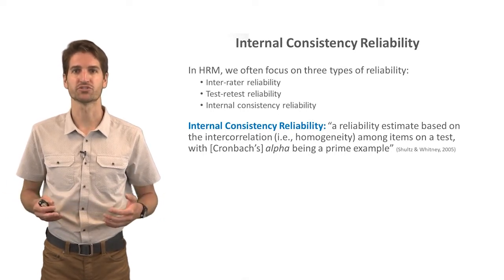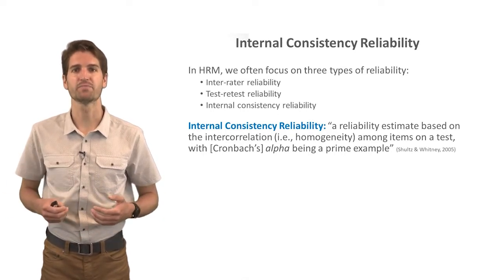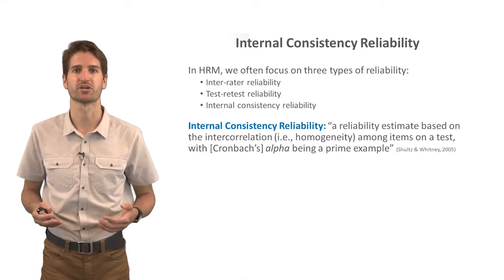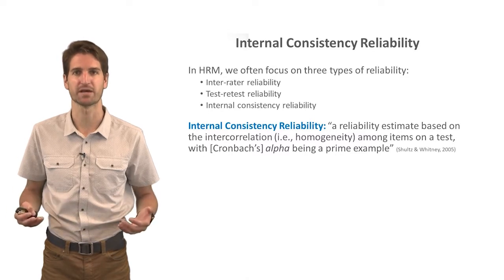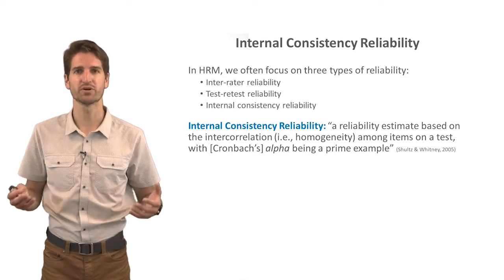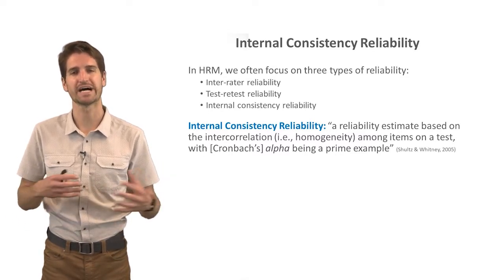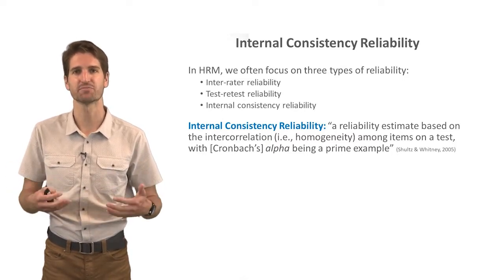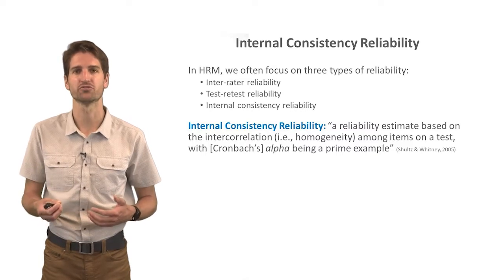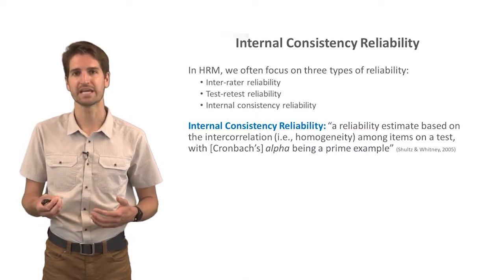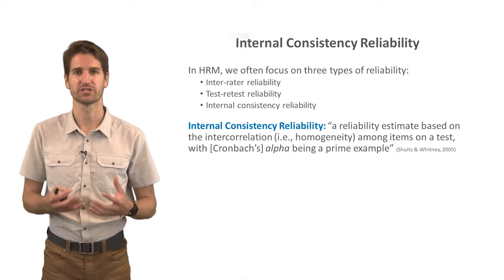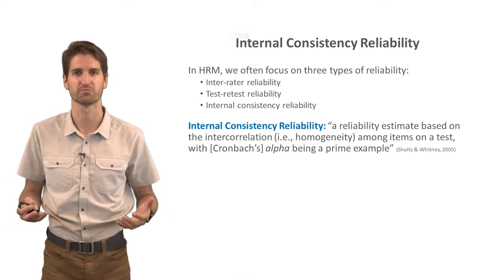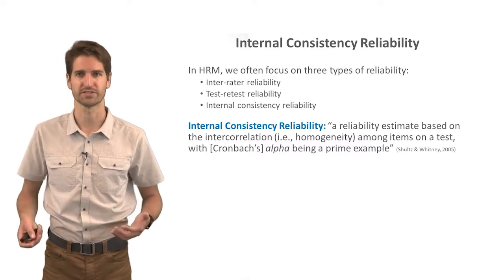To quote Schultz and Whitney, internal consistency reliability is a reliability estimate based on the inter-correlation or homogeneity among items on a test, with Cronbach's Alpha being a prime example. More simply put, it's essentially the degree to which all the items are strongly correlated with each other. An internal consistency reliability estimate gives us a single value or indicator of how consistent these different items are on a particular measure, and whether they seem to represent the same thing.